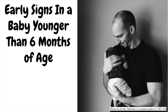In a baby younger than 6 months of age: his head lags when you pick him up while he's lying on his back; he feels stiff or floppy; when held cradled in your arms, he seems to overextend his back and neck, constantly acting as if he's pushing away from you; and when you pick him up, his legs get stiff and they cross or scissor.